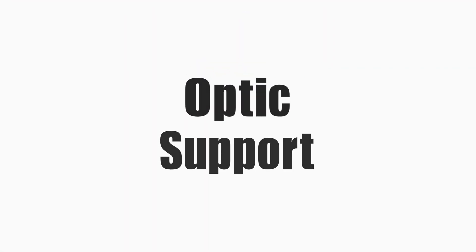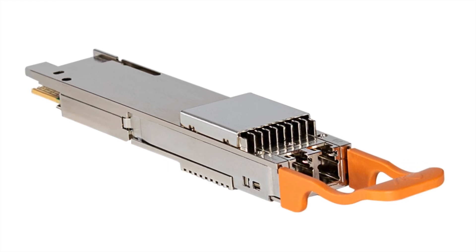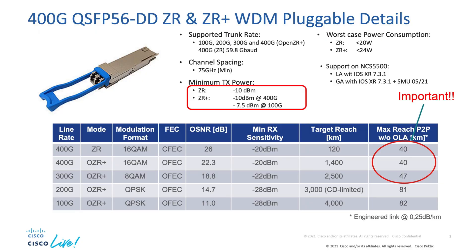What is 400GB ZR? ZR optics are the first time we bring coherent technology to the 400GB lineup of modules. Coherent is the enabler for long distance transport. In this case, we have two different versions: one being the 400GB ZR, which covers distances up to 120km, and one being the 400GB ZR Plus, which can cover distances up to several hundred kilometers depending on type of modulation.